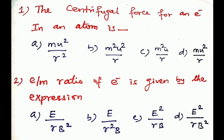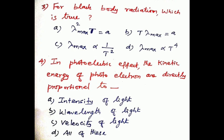Question number two: the e/m ratio of electron is given by the expression. Option a: e/r·b², option b: e/r²·b, option c: e²/r·b, option d: e²/r·b². The e/m ratio of electron follows the formula e/r·b², so option a is the correct answer.